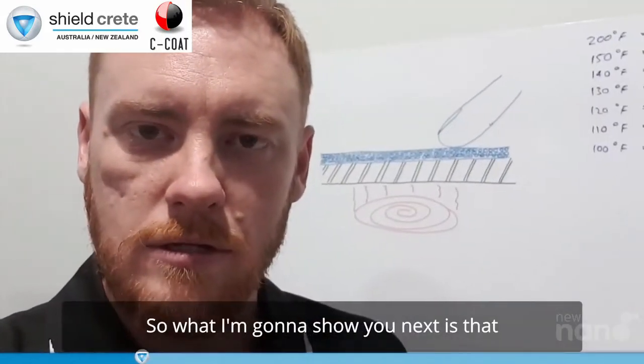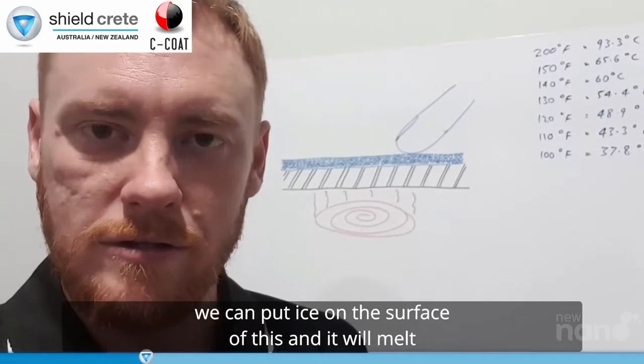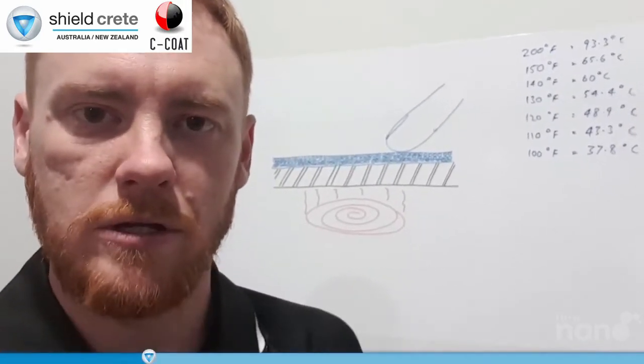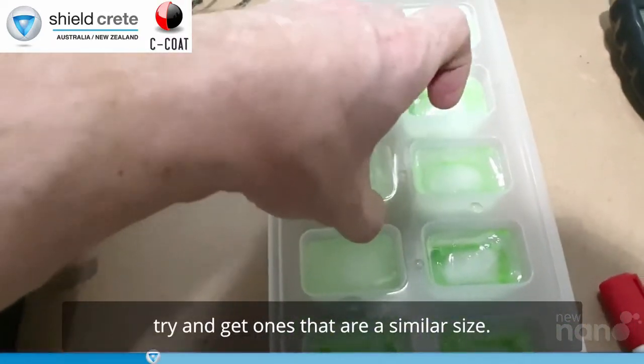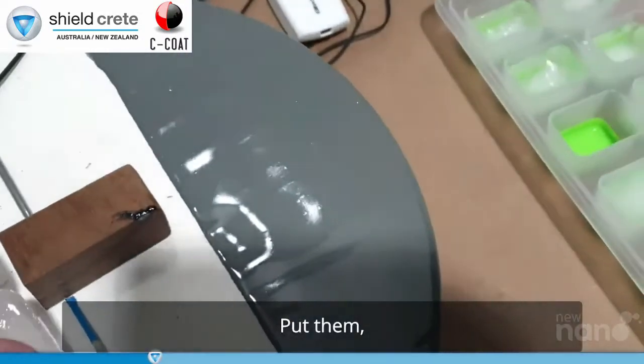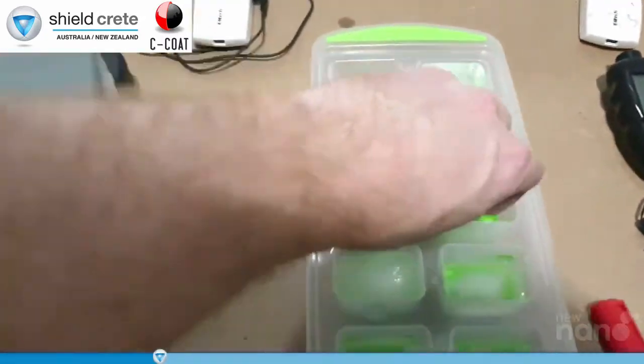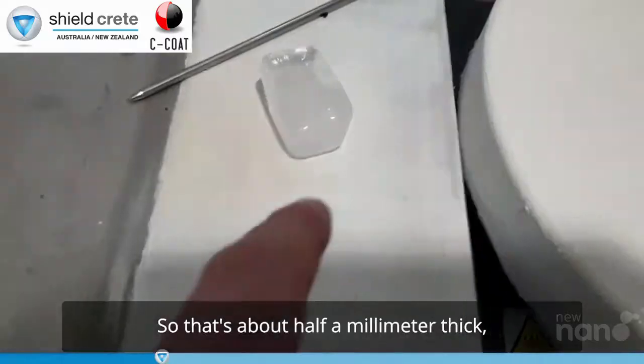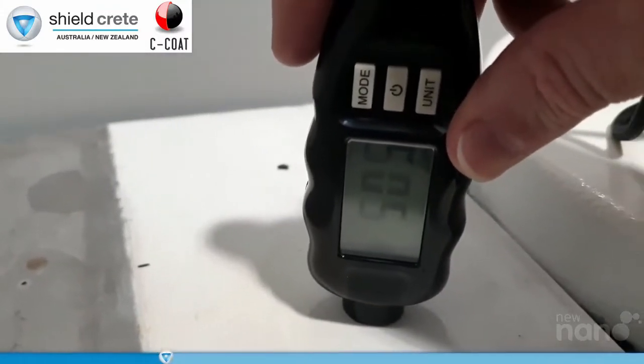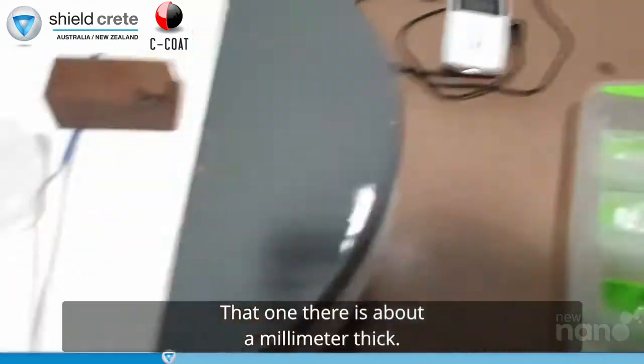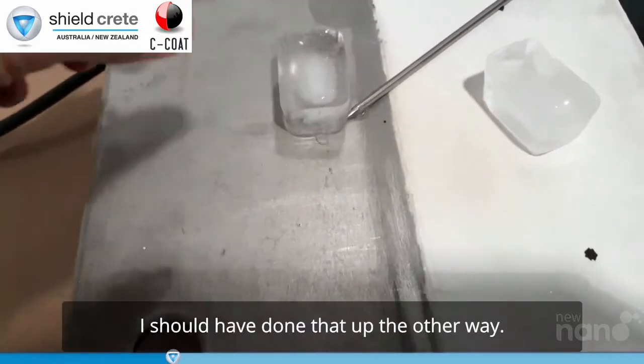So what I'm going to show you next is that even with the temperatures that high, we can put ice on the surface of this and it'll melt like it's just sitting on a normal bench. So this is just ice straight out of our freezer. Try and get ones that are similar size. No tricks. This is normal ice straight out of the tap. So that's about half a millimeter thick or spot on half a millimeter thick. That one there is about a millimeter thick.